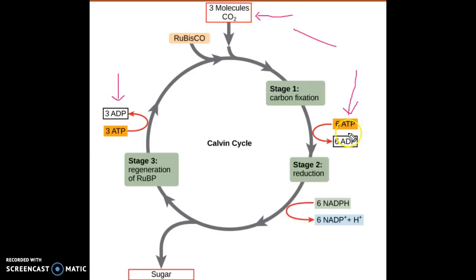So basically three molecules of carbon dioxide that get processed in the Calvin cycle and at the end those are going to exist as glucose C6.